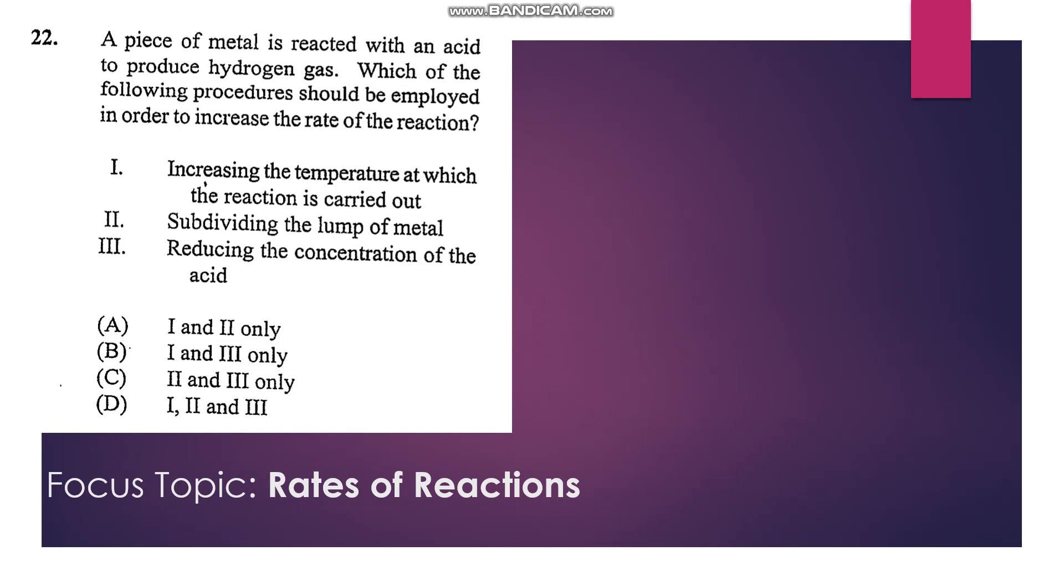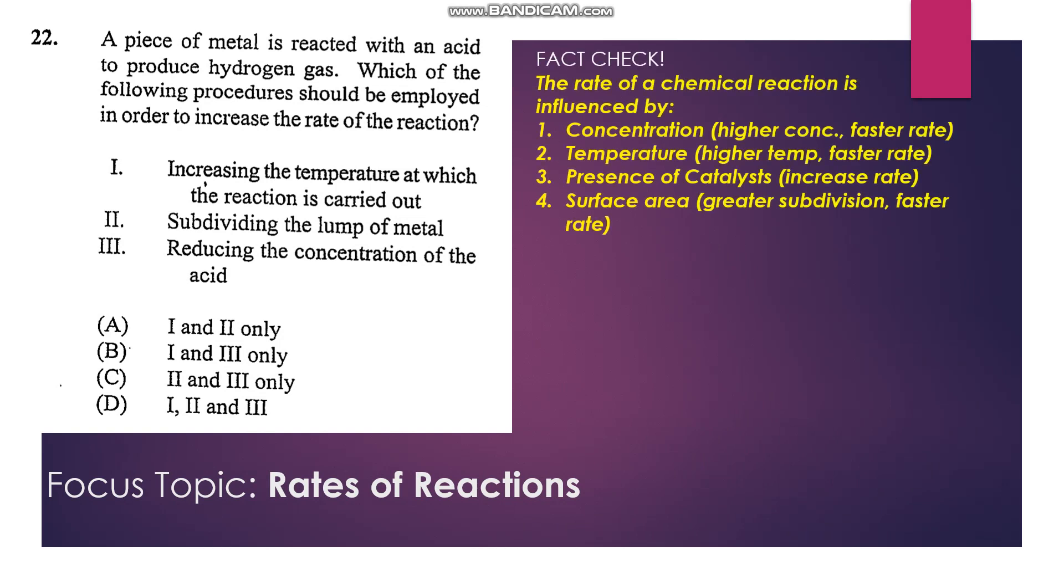Number 22: A piece of metal is reacted with an acid to produce hydrogen gas. Which of the following procedures should be employed to increase the rate of the reaction? So factors that increase the rate of chemical reaction: increasing the temperature, concentration, and increasing the surface area.